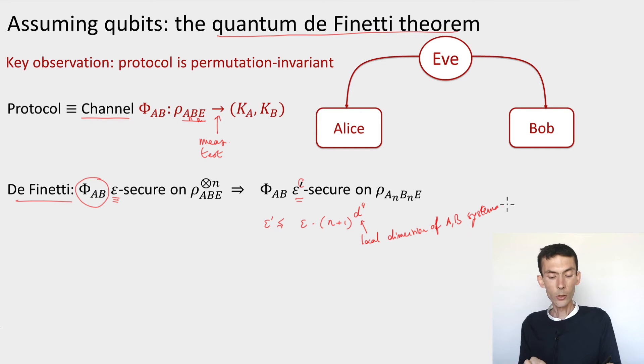And in this way we'd have been able to reduce security against collective attacks, tensor product states, to security against general attacks, arbitrary states.